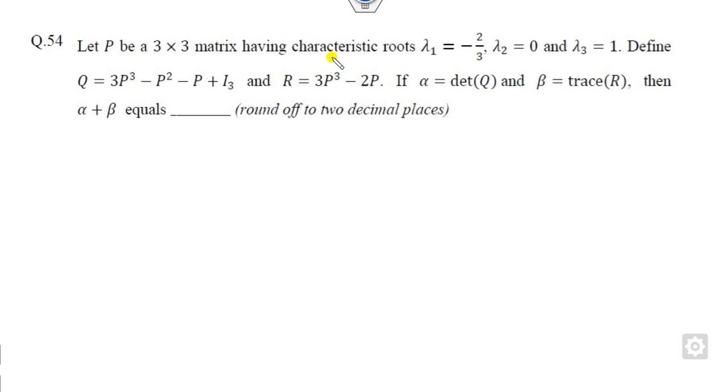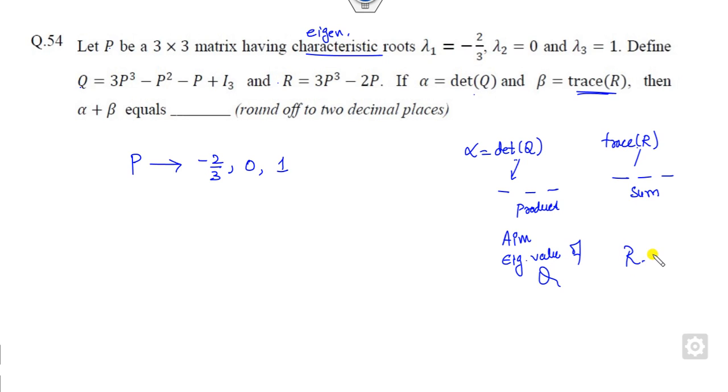What is the concept behind them? Whenever in competition examinations they are asking about eigenvalues - if P is a 3 by 3 matrix whose eigenvalues are 2/3, 0, and 1. Now you have to find Q, R, and so on. So alpha is nothing but the determinant of Q. The product of eigenvalues is the determinant. The sum of eigenvalues of R is the trace of R. So my basic aim is to find the eigenvalues of Q and eigenvalues of R.